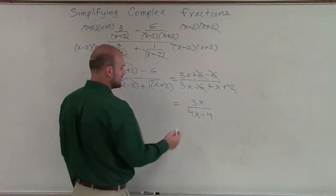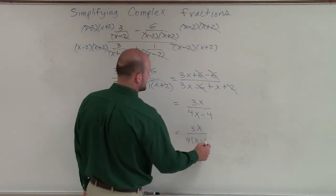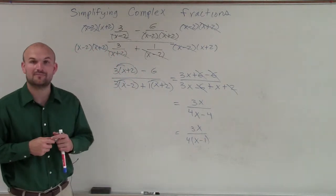Therefore, now I can factor out a 4 to simplify this even further. So I have 3x divided by 4 times x minus 1. So there you go, ladies and gentlemen. That is how you simplify your complex fraction. Thanks.